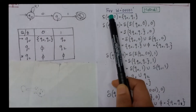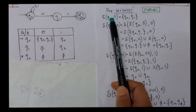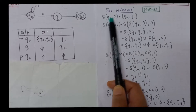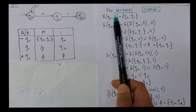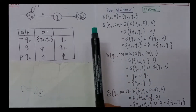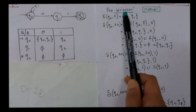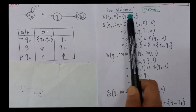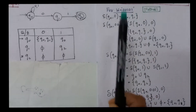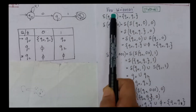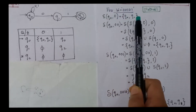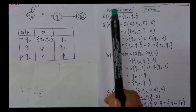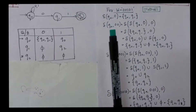I start from the start state, which is q0, with my first input symbol 0. q0 with the first input symbol 0 gives me the result q0, q1. So delta of q0, 0 gives me q0, q1. Then we move on to the next step.